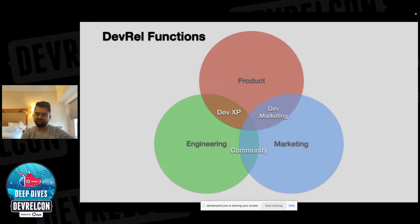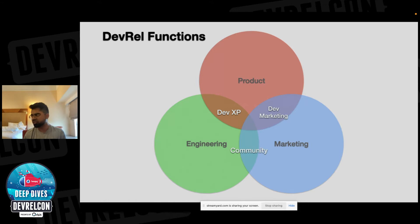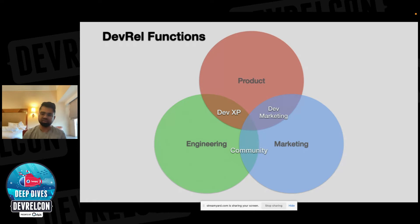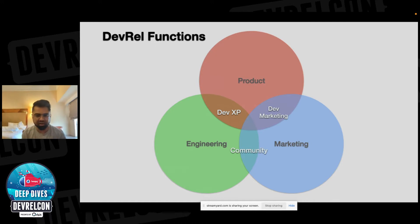If you look at the product and marketing overlap, which is developer marketing, think of it as the outermost layer — where developers need to find the product, where you need to make them aware. A lot of DevRels speak at conferences, just like I'm doing right now, to talk about the product and the impact it can create. Through content, written blogs, and talks, we try to reach developers who are potentially looking for similar solutions, or at least keep this product on their radar.